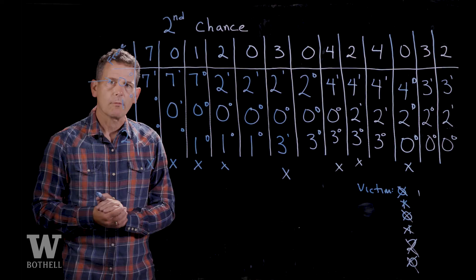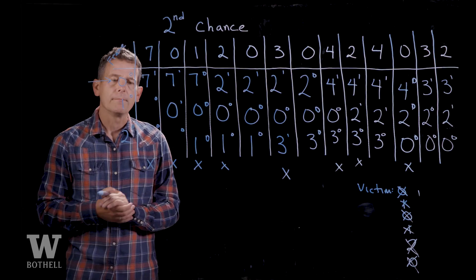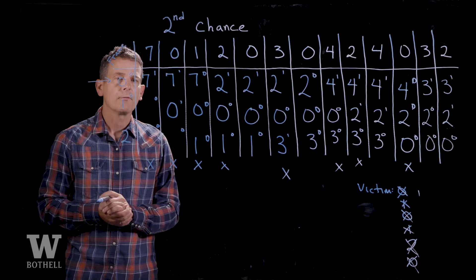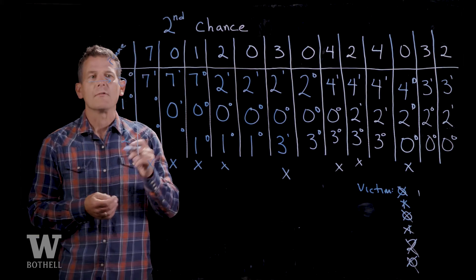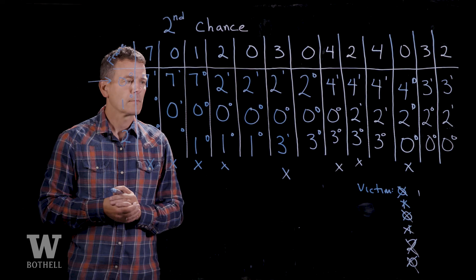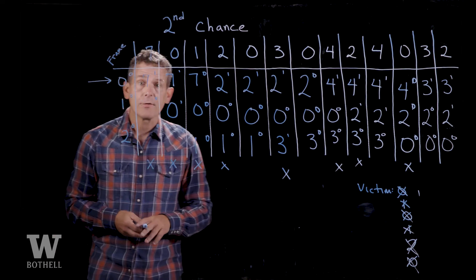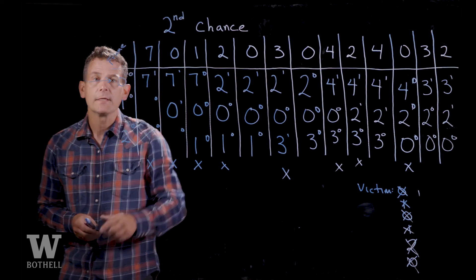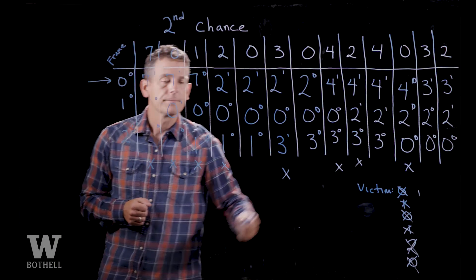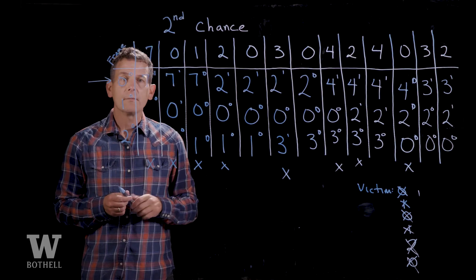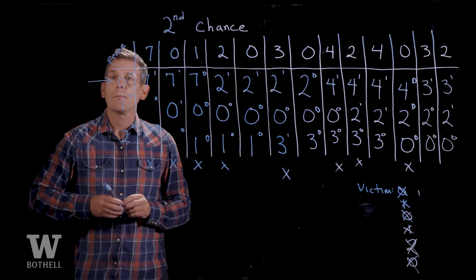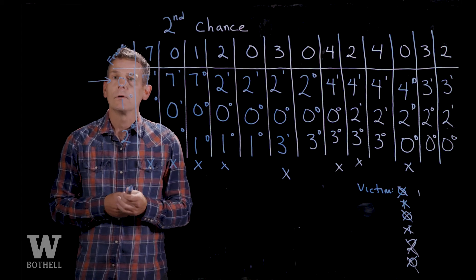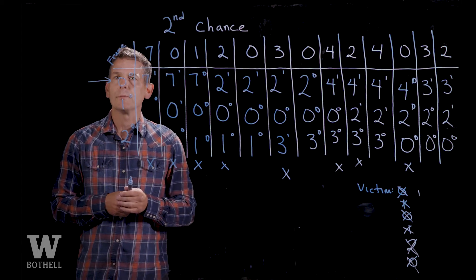This is a simple example with only three frames. Obviously, real systems have thousands or millions of frames in memory, and you don't generally loop through all of memory looking for a free location. The nice thing about the second chance algorithm is that it's very easy to implement — the hardware takes care of the reference bit and all you have to do is keep track of a victim frame. Inexpensive to implement, and it does a pretty nice job of approximating the least recently used algorithm, which is close to optimal.